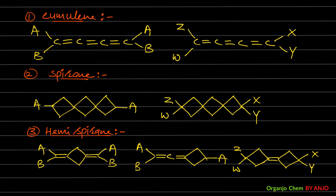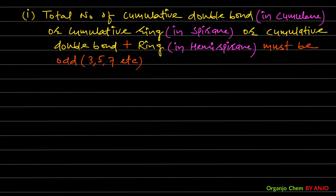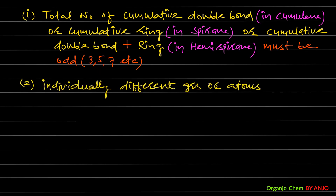The conditions for the cumulative system to show GI are: Condition 1 — for cumulene, the number of cumulative double bonds must be odd; for spirene, the number of cumulative rings must be odd; for hemispirene, the total number of cumulative double bonds plus rings must be odd. After condition 1 is fulfilled, condition 2 is checked: the extreme terminus atoms must have individually different groups present.